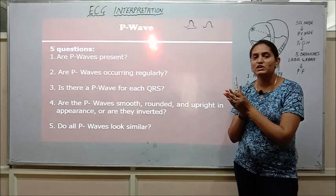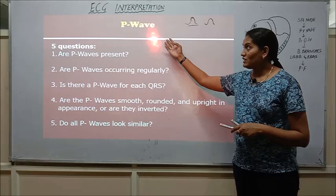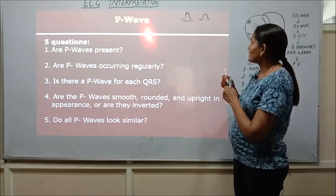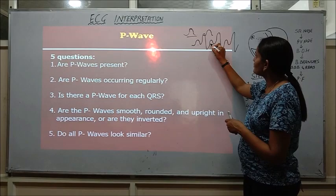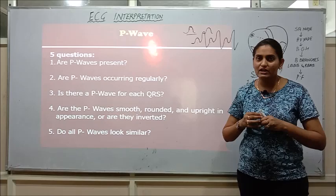Fifth question about the P waves is do all the P waves look similar which means that across the ECG there would be so many P waves followed by the QRS complexes. So all the P waves have to look similar which will reveal that the patient is not having any dysrhythmic condition there is no arrhythmia and the patient is having a normal cardiac cycle taking place.